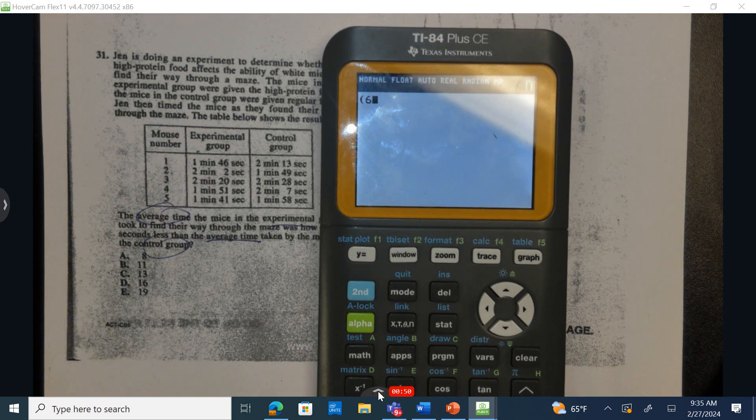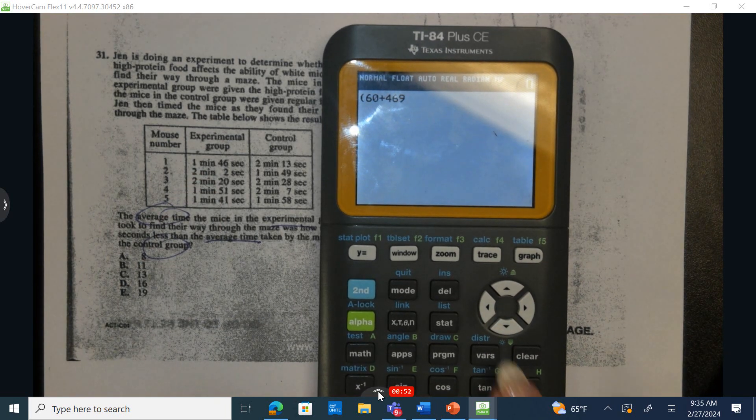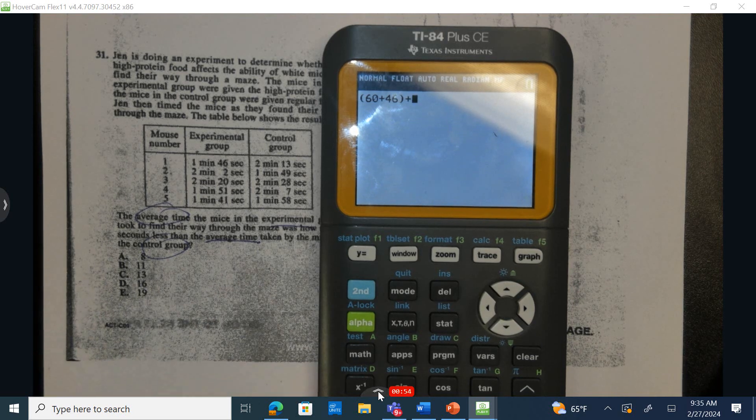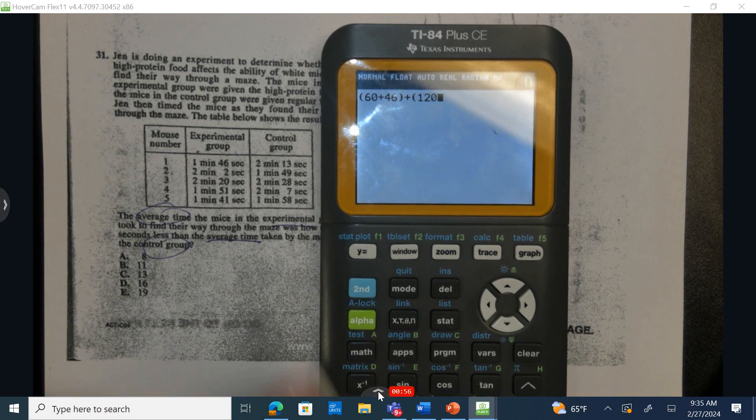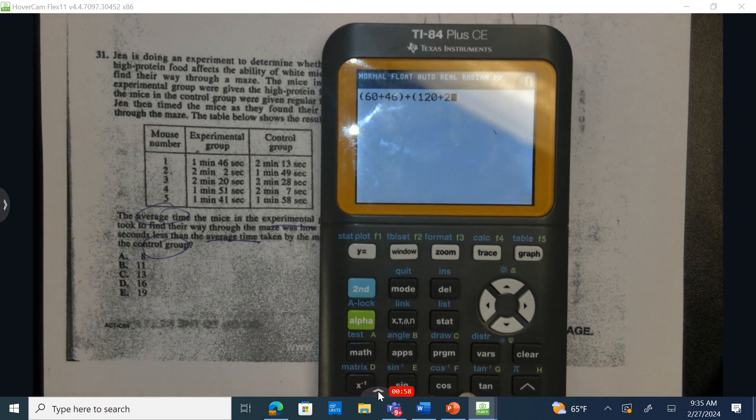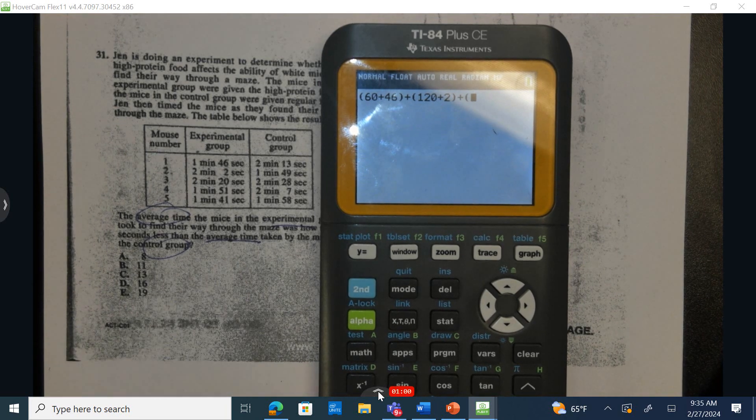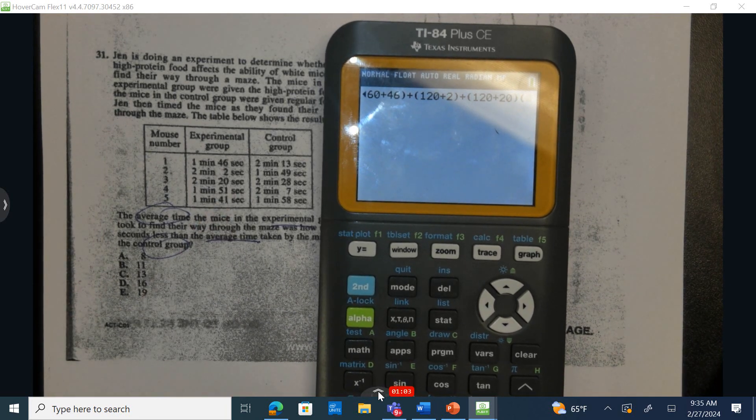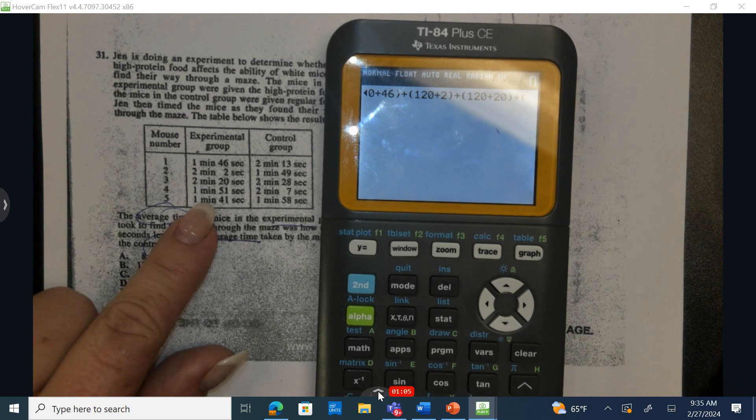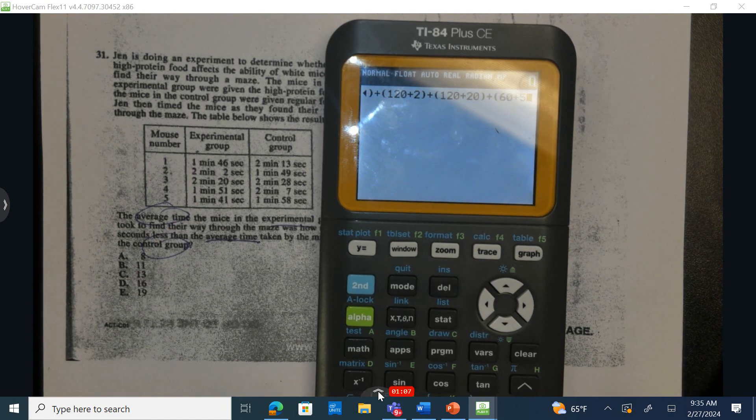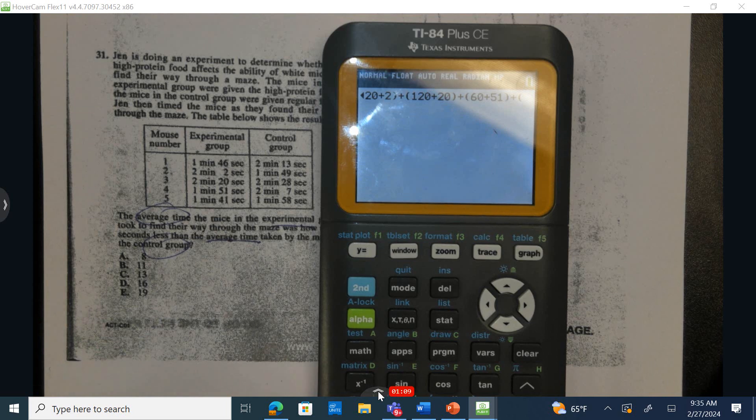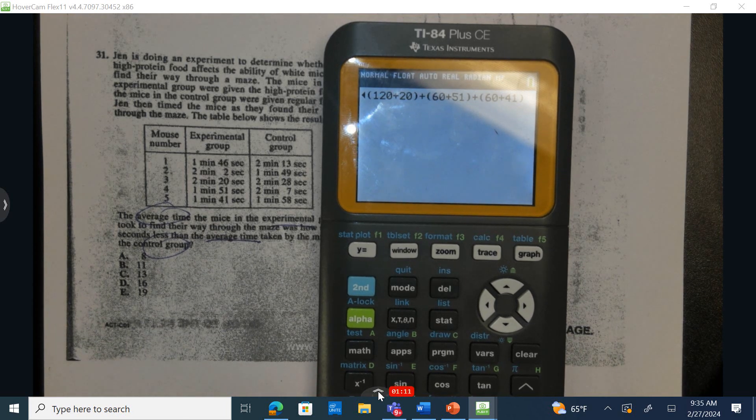Alright, so this first group I have 60 plus 46. The second is going to be 120 because it's two groups of 60 to create two minutes. Again, 120 plus 20. I have 60 plus 51. And finally I have 60 plus 41.